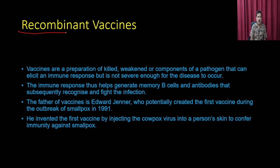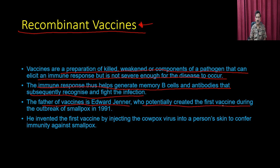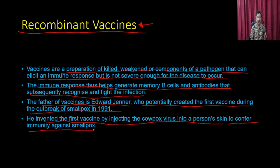Let us discuss recombinant vaccines, produced using recombinant DNA technology. These vaccines are preparations of killed, weakened, or components of a pathogen that can elicit an immune response but not cause severe illness. The immune response helps generate memory B cells and antibodies that subsequently recognize and fight infections. The father of vaccines is Edward Jenner, who created the first vaccine by injecting cowpox virus to confer immunity against smallpox.